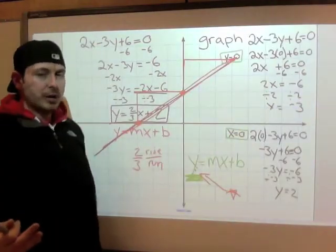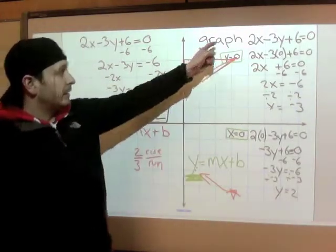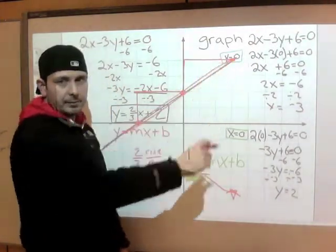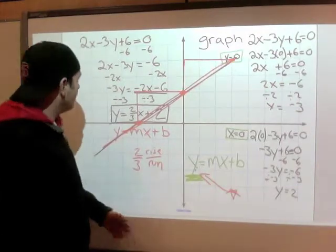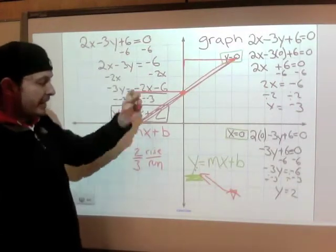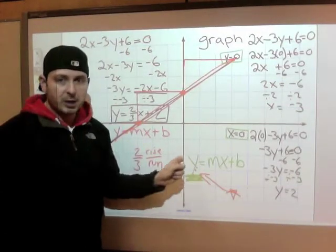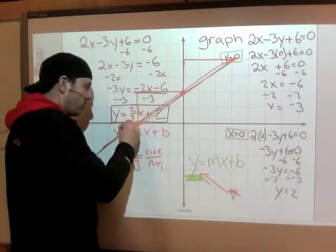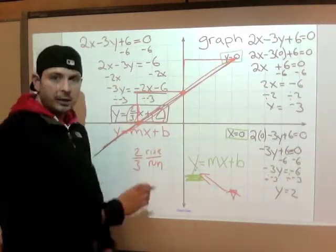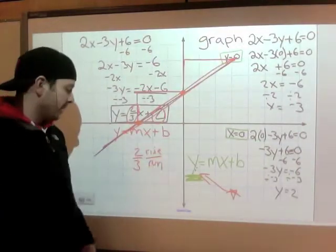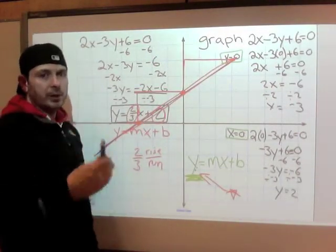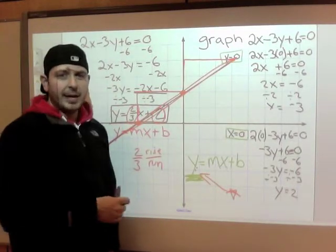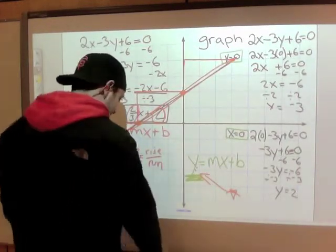Two ways to graph these: given an equation in general form, find your intercepts, plot them, connect them. The other way — change your general form into y equals form. That is our graphing form. Put it into y equals form — slope, intercept — put them on, draw your line. Very important that you understand this. If you don't get it, come see me, watch the video again, find a way to get this stuck in your head.